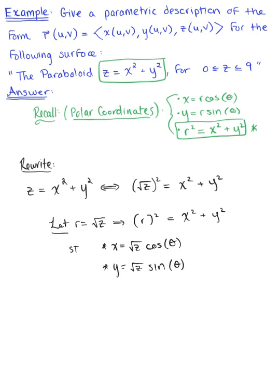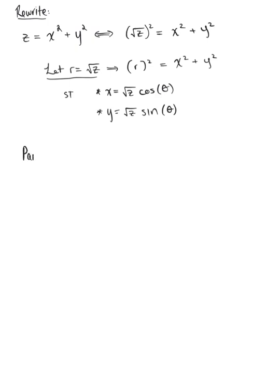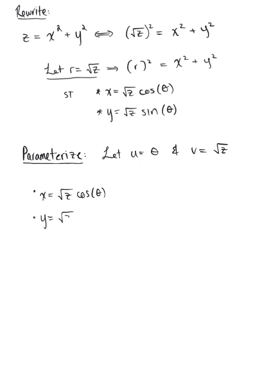We can use this to parameterize in terms of u and v. Let u be theta and v be the square root of z. From our conversion formulas, x is defined as the square root of z times cosine of theta, y is the square root of z times sine of theta, and since we defined the radius as the square root of z, z equals the radius squared, i.e., z equals v squared.